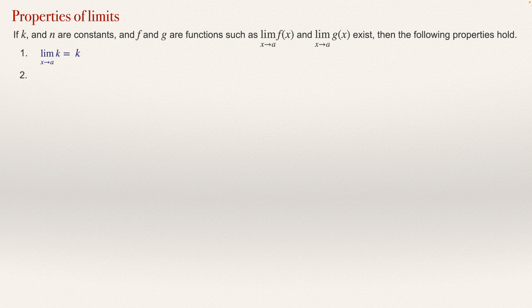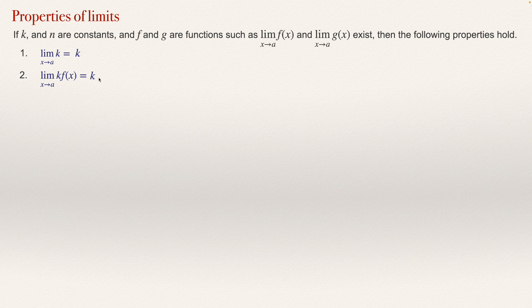The second property: if we have the limit of a constant multiplied by a function, we can take the constant out and just compute the limit of the function. So it will be the constant multiplied by the limit of the function.